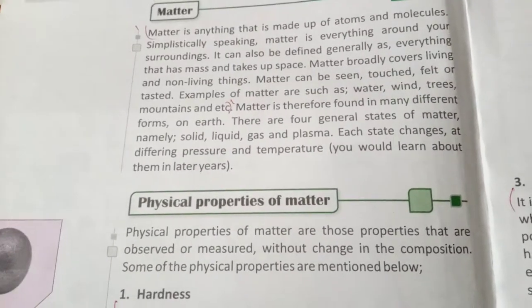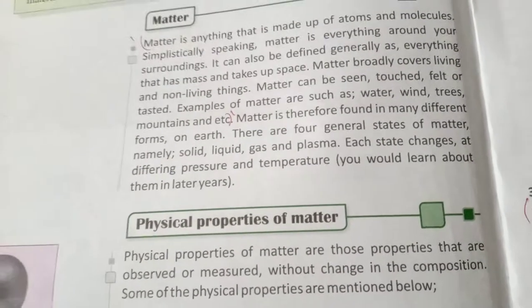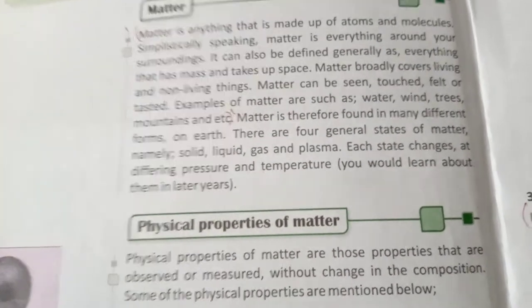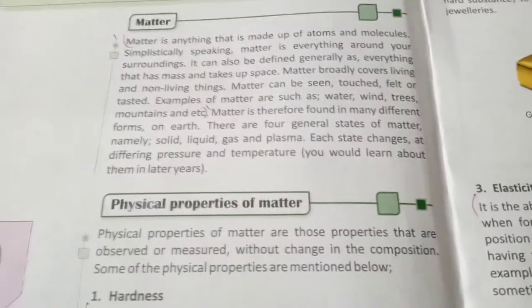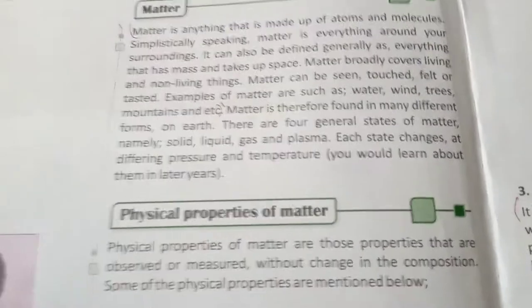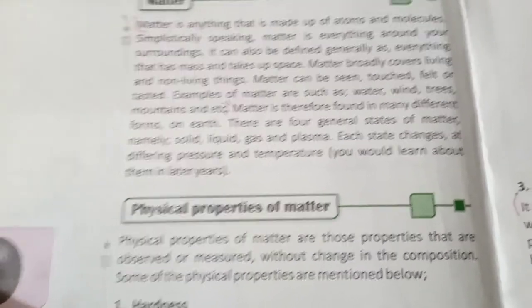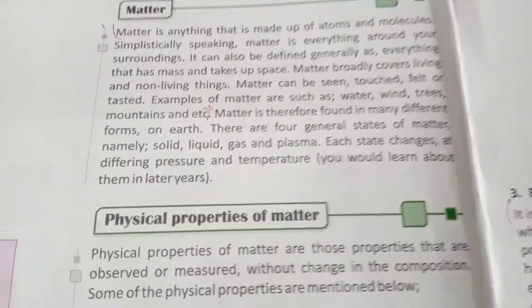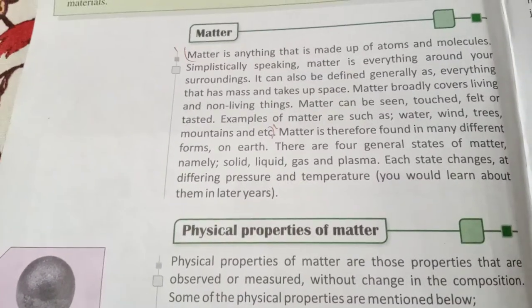There are four states of matter. Matters are solid, liquid, gas, and plasma. Plasma is the fourth state of matter. Today we are studying the four states of matter. Each state changes at different pressure and temperature. The states of matter are solid, gas, and liquid.